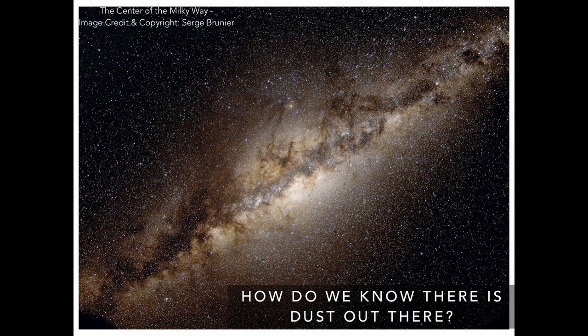The first question I want to ask is: how do we even know there's dust out there? The answer is probably clear just from looking at this image of the Milky Way in visible light. You can already see patchy regions that look darker than the rest of the galaxy. The basic reason we know dust is out there is because dust grains block visible light from getting to us. If we look through the disk of the Milky Way and there's a cloud of gas and dust between us and some stars, those stars appear fainter — and sometimes we can't even see them because of that dusty cloud.